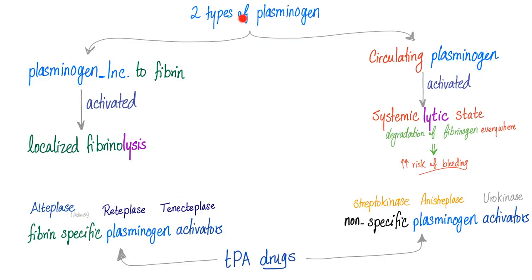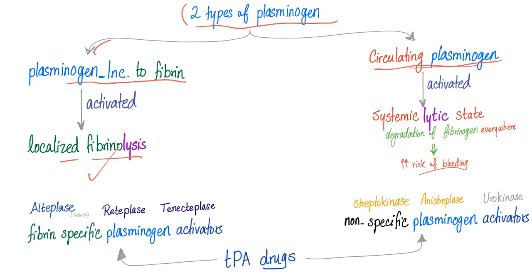Pay attention — there are two types of plasminogen: plasminogen incorporated into the fibrin, and the freely circulating plasminogen. When you activate the fibrin-incorporated plasminogen, you get localized fibrinolysis, which is desirable. When you activate the freely circulating plasminogen, you get a systemic lytic state — fibrinolysis all over the body — which increases the risk of bleeding. This is not a good thing.